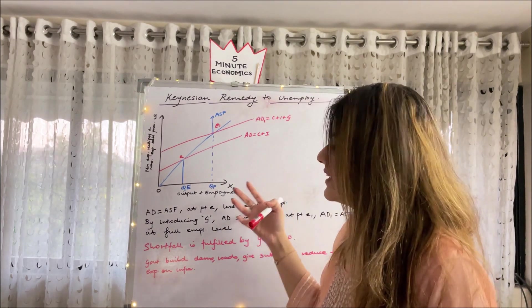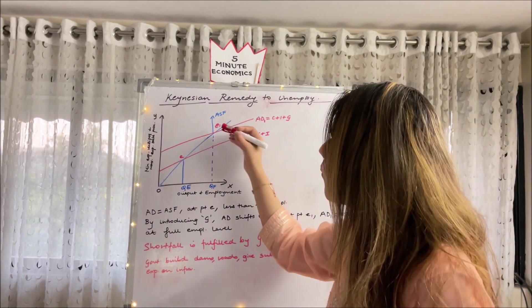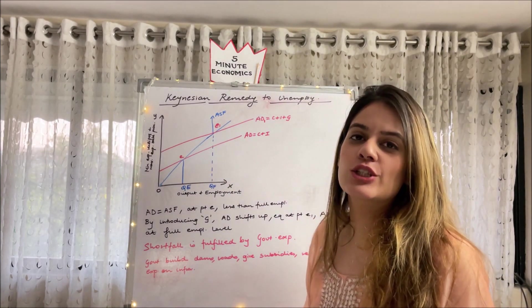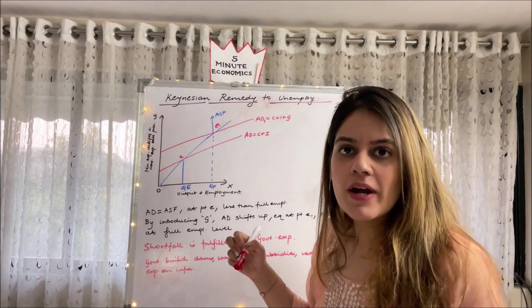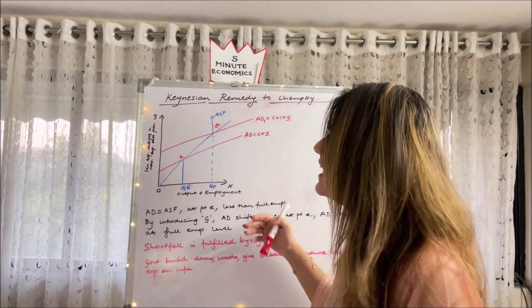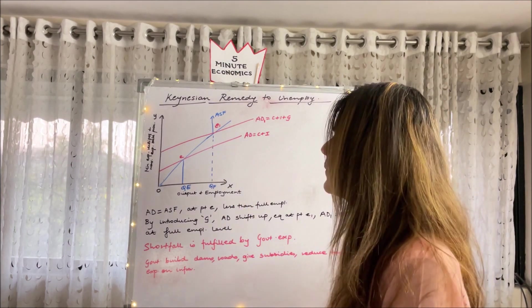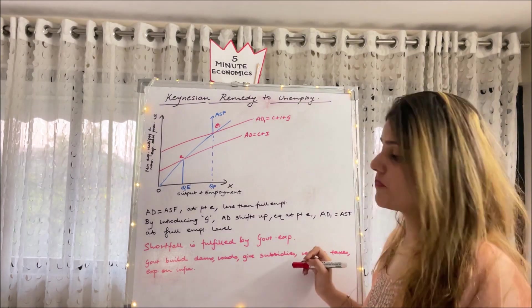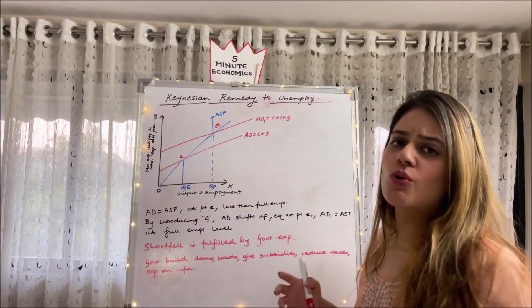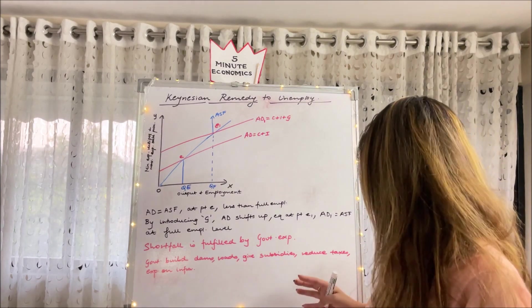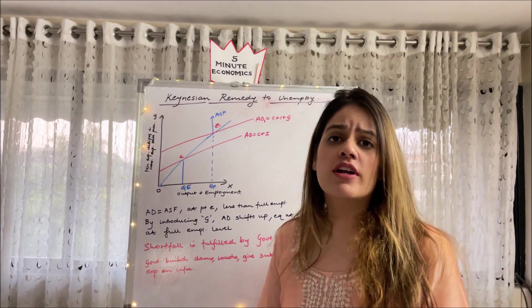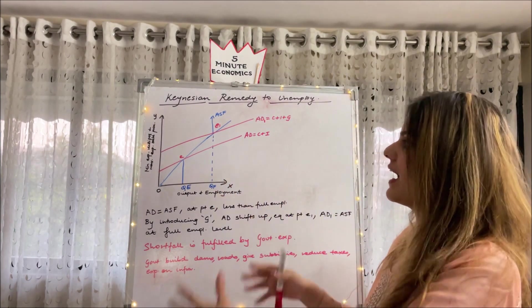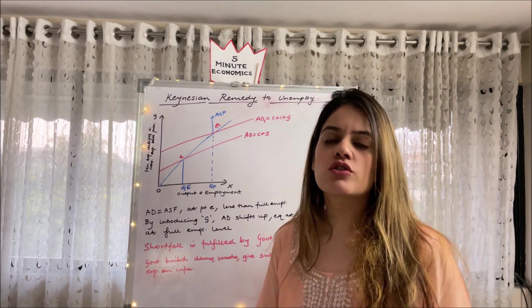Can you see after a point of time our ASF goes vertical, straight line? Because you remember that is how it reacts at full employment. But now what we have to focus on is how do we achieve full employment under Keynesian theory? Basically by increasing the government expenditure, which will push up the AD, and then we achieve full employment. So the shortfall is fulfilled by government expenditures. Government can build dams, roads, give subsidies, reduce taxes, spend more on infrastructure. Many ways government can incur expenditure. Government expenditure can push up aggregate demand, and that is the whole crux of the Keynesian theory.